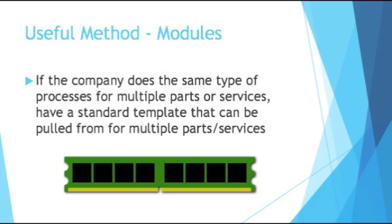FMEAs are a really useful tool for a company to begin looking at their problems and correcting them. It's really interesting to put countermeasures into place and watch your risk priority numbers go down — it means problems will be happening less, and you will catch them quicker and prevent them. It saves a lot of money, and to be honest, it's actually pretty fun to sit around and talk about potential problems if you have the right sense of humor.